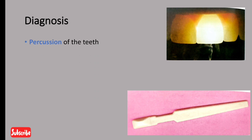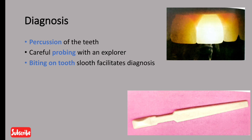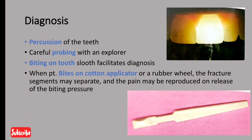For diagnosis, percussion of the teeth cannot give a definitive diagnosis of Cracked Tooth Syndrome, as percussion findings are related to many conditions. A more useful method is careful probing with an explorer or biting on a tooth sloth device — visible in the figure at the bottom. The patient is asked to bite on the tooth sloth, and pain upon releasing the bite is diagnostic of Cracked Tooth Syndrome.